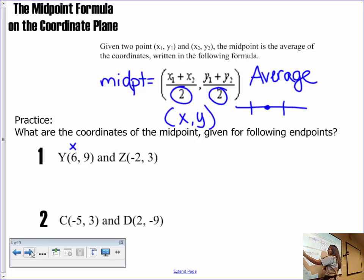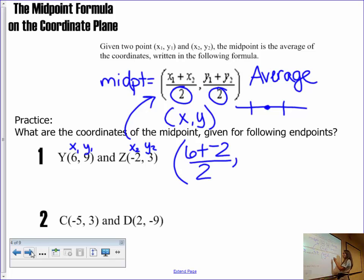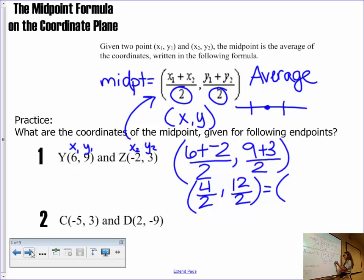So looking at number 1, we have, and if it helps you, you can label x1, y1, x2, y2, and then you can plug it right into the formula. So midpoint, x1, 6, plus x2 would be negative 2 divided by 2, comma, let's do the y's, 9 plus 3 and divide by 2. So now what we're going to do is go ahead and simplify this. 6 plus the negative 2 leaves you with 4 over 2, 9 plus 3 leaves you with 12 over 2, and then we can simplify those fractions even further to find the midpoint to be 2, 6. So that's your final answer.